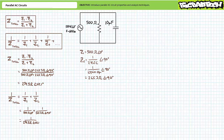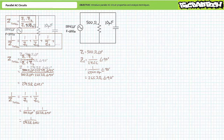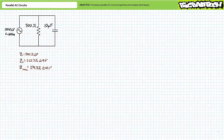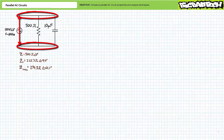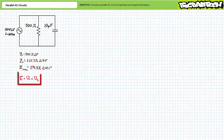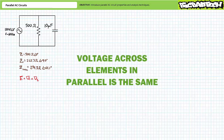Let's put these impedance values aside and examine voltage distribution in parallel AC circuits. Voltage is a two-point measurement. As such, voltage across elements in parallel is the same — this is the most fundamental parallel AC circuit property. Given the source establishes a differential of 120 volts between the top and bottom node, resistive impedance Z1 experiences 120 volts, as does capacitive impedance Z2. E equals V1 which equals V2. If we know the voltage across any parallel element, we by extension know voltage across all remaining elements in parallel.